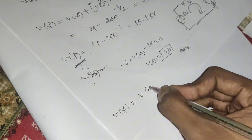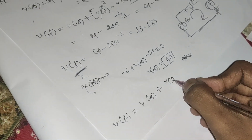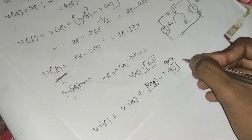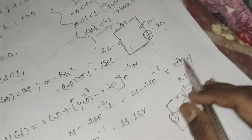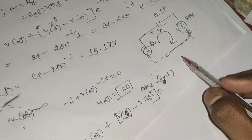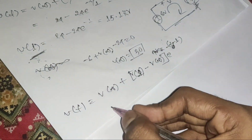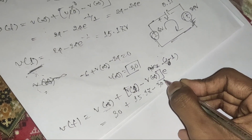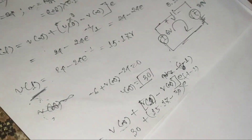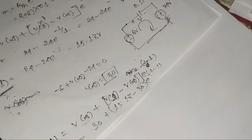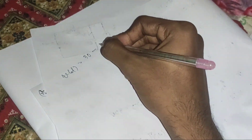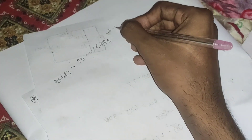Using the equation v(t) = v∞ + (v₀ − v∞)·e^(−(t−1)/τ), with v∞ = 30, v₀ = v₁ = 15.17, and τ = 1: v(t) = 30 + (15.17 − 30)·e^(−(t−1)) = 30 − 14.83·e^(−(t−1)) volts. This is the final answer for problem 7.47.